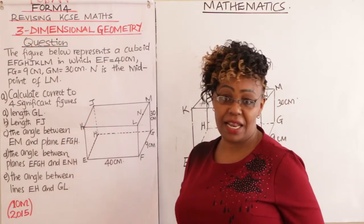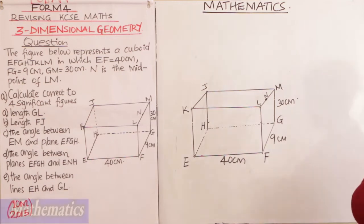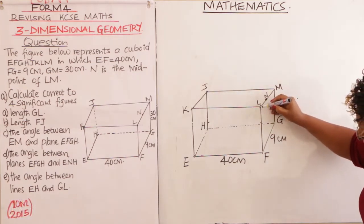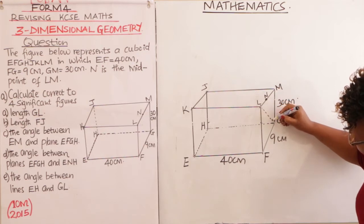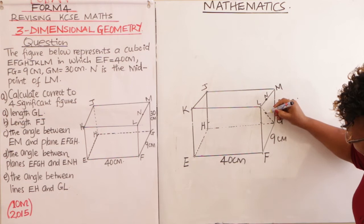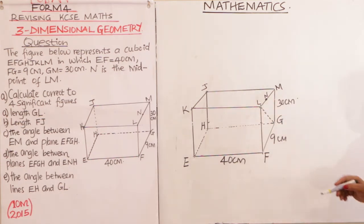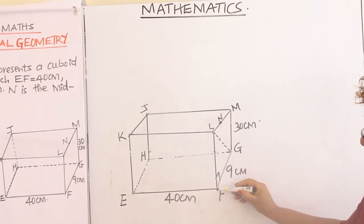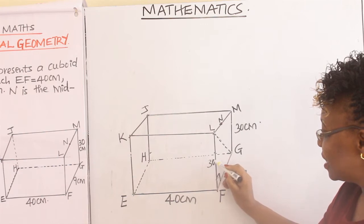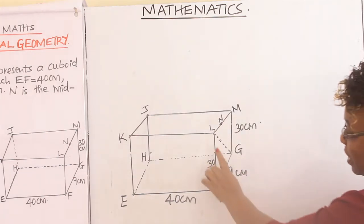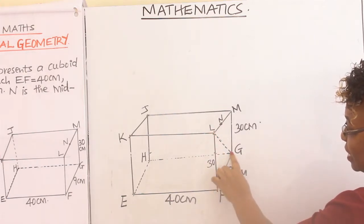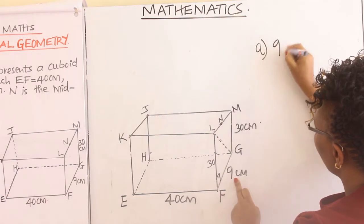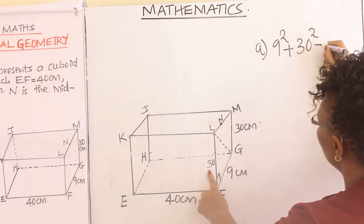The first question asks us to calculate, correct to four significant figures, the length GL. GL is a diagonal on the side of the cuboid — the diagonal of this rectangle on this side. Since this is a right-angle triangle with the two sides being 9 and 30, GL is the hypotenuse. We apply Pythagoras' theorem: 9 squared plus 30 squared gives us GL squared.